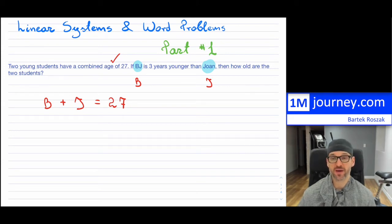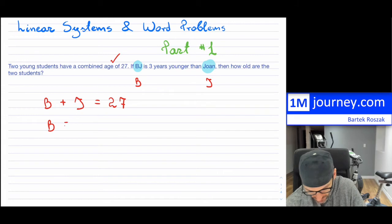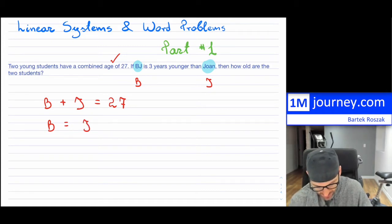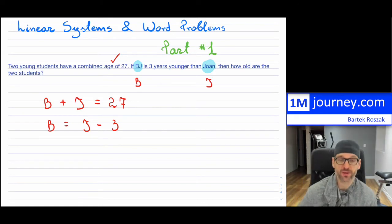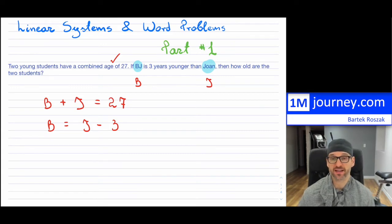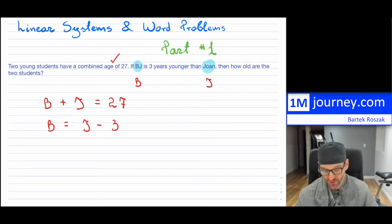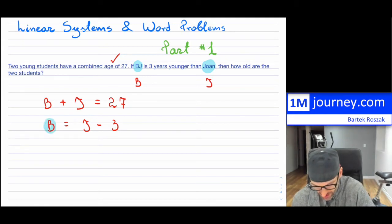The second piece of information says BJ is three years younger than Joanne. The word 'is' means equals, and 'three years younger than Joanne' means Joanne minus three, because BJ is less than Joanne — three years less. So we have b equals j minus 3. That gives us two equations and two unknowns.